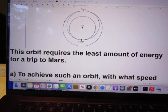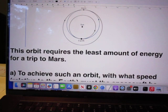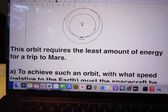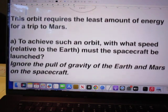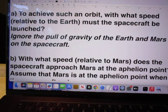This orbit requires the least amount of energy for the trip to Mars. To achieve such an orbit, with what speed relative to the Earth must the spacecraft be launched? Ignore the pull of gravity of the Earth and Mars on the spacecraft.